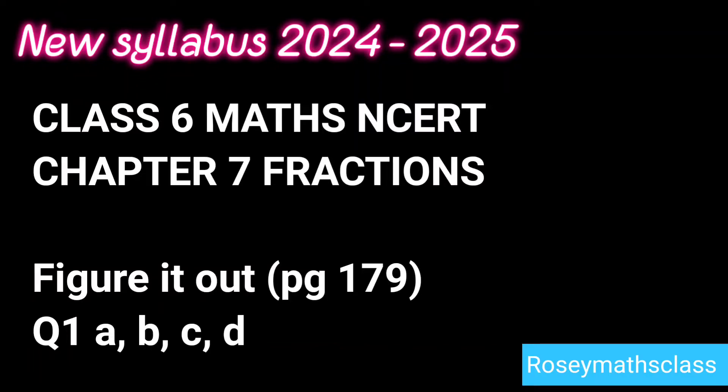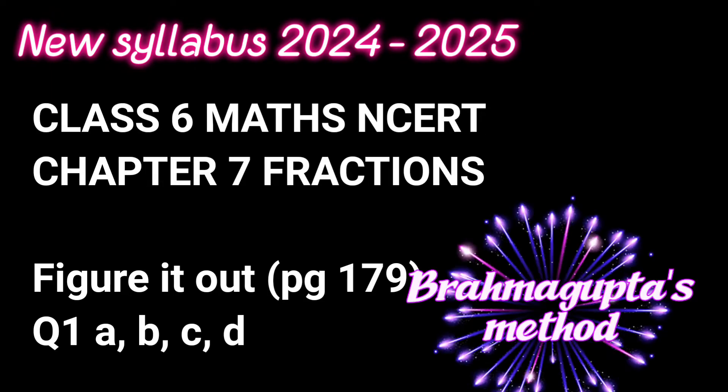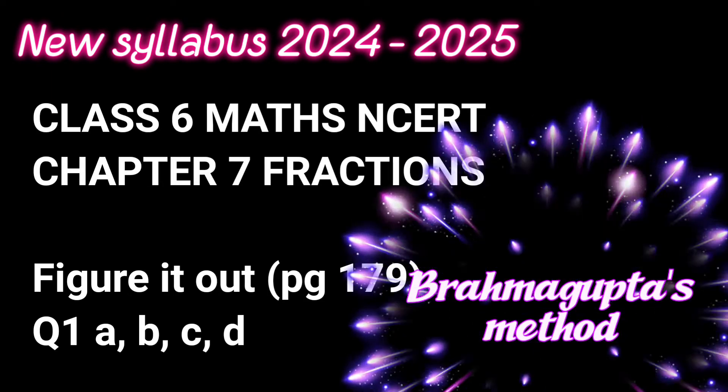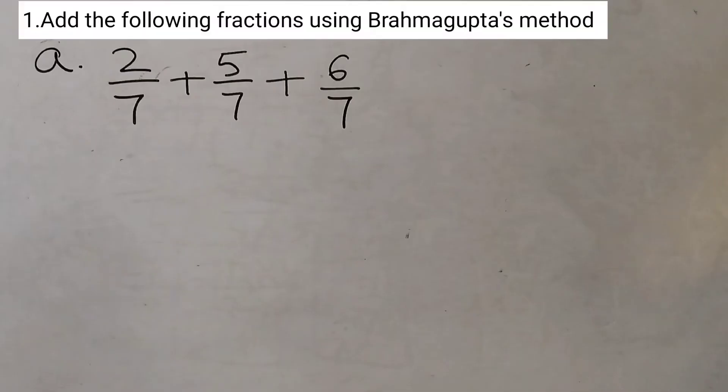Hello students, welcome back to Rosimath's class. Today we shall do the questions given in figure it out of chapter 7 fractions on page number 179. The question is add the following fractions using Brahma Gupta's method.